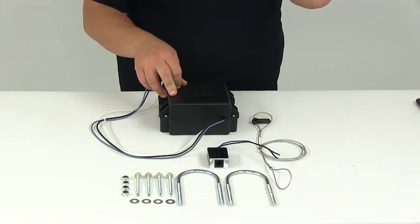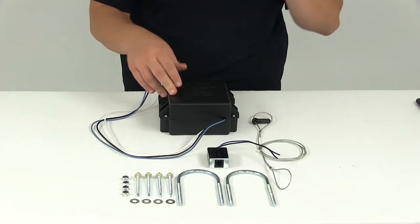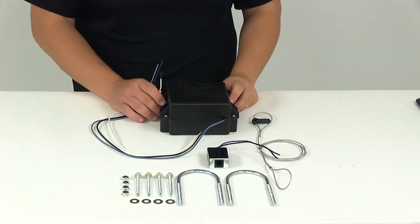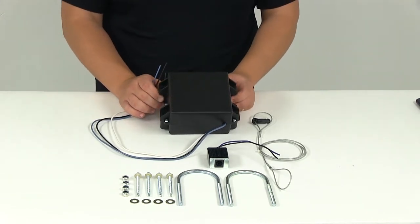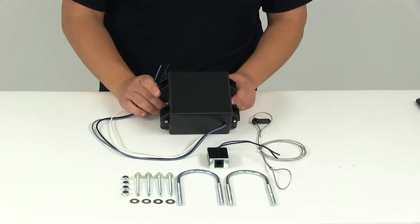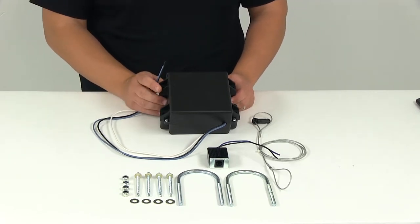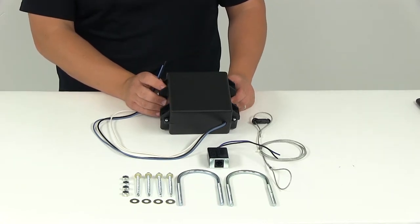This type of safety system is usually required in most states on trailers rated over 3,000 pounds. The box can be mounted on a trailer jack or trailer frame. It works with single axle and tandem axle trailers with electric brakes, and this breakaway kit system does meet DOT specifications.